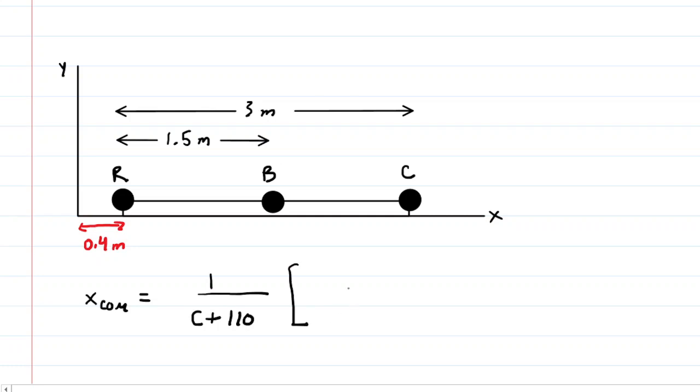And then we multiply that by the mass of Ricardo times his x-coordinate. Notice he's not at the origin of this system. He has now been shifted, the boat has been shifted 0.4 meters to the right. So that x-coordinate is 0.4 meters.